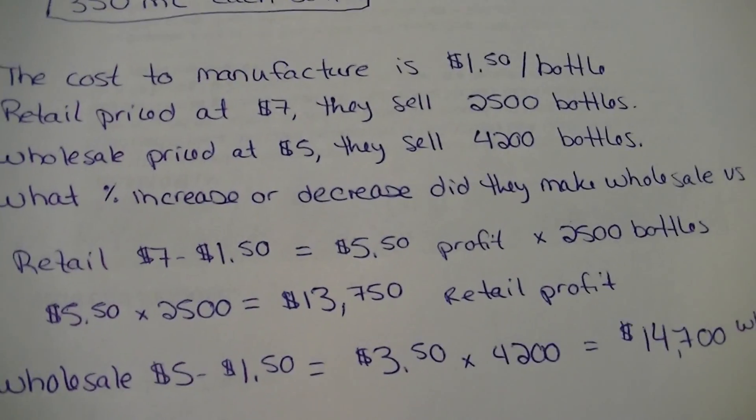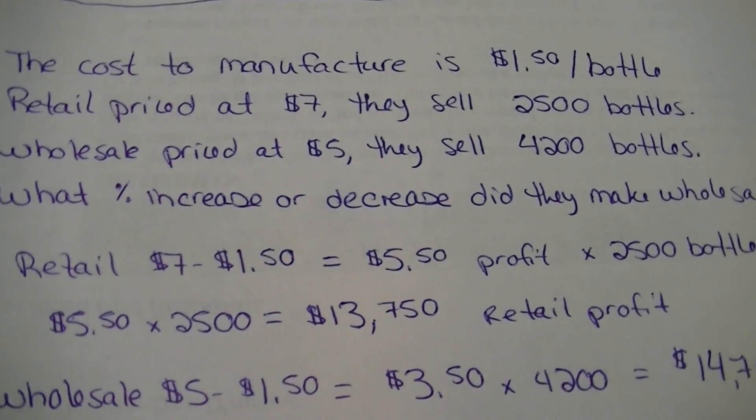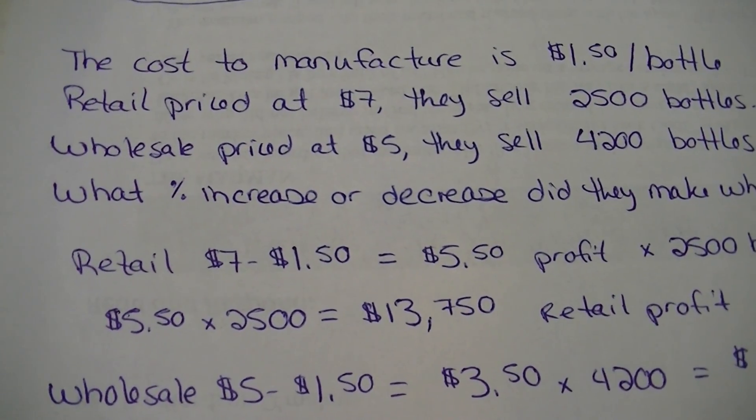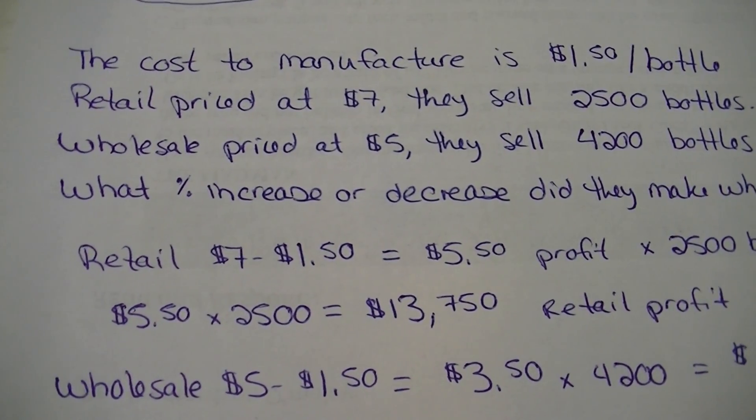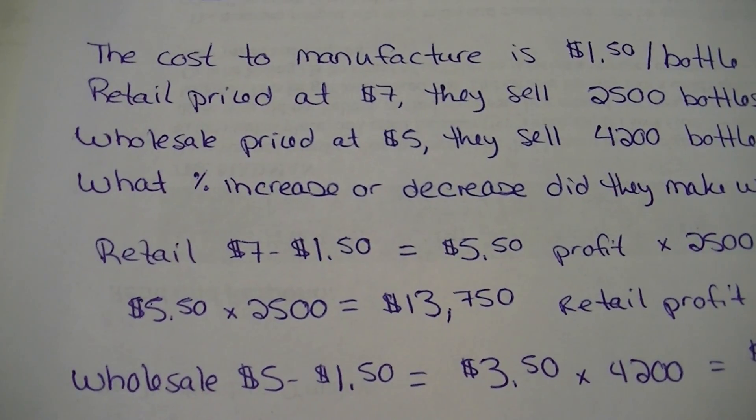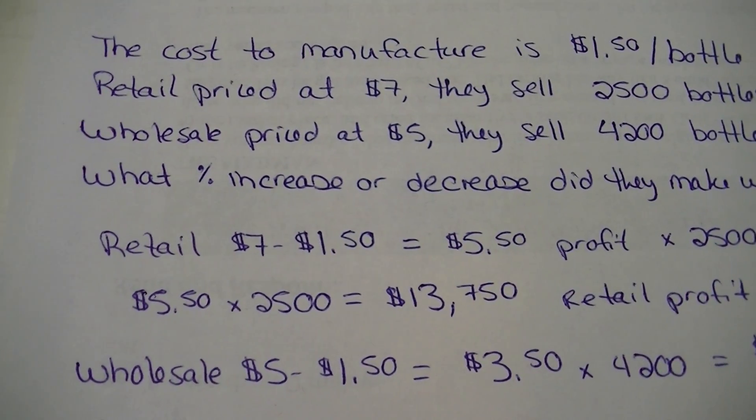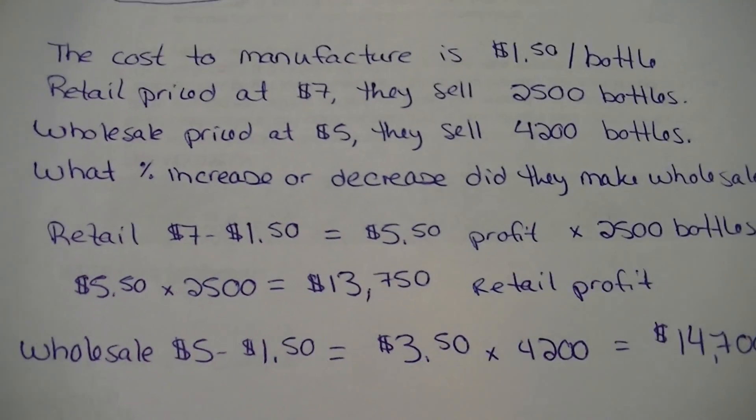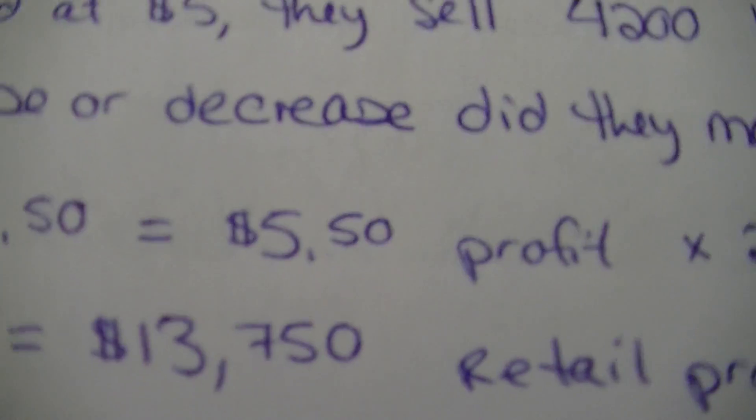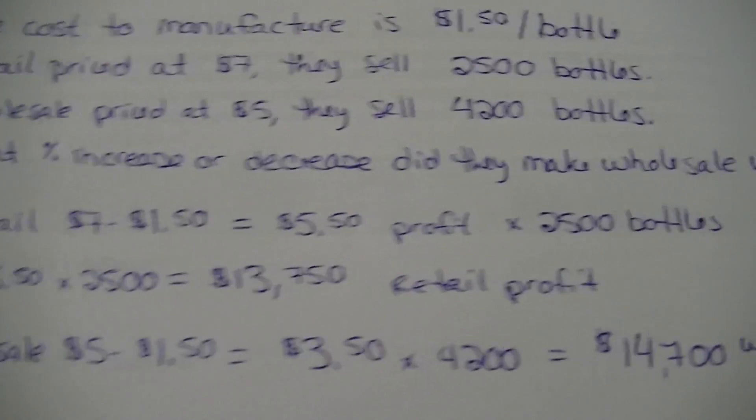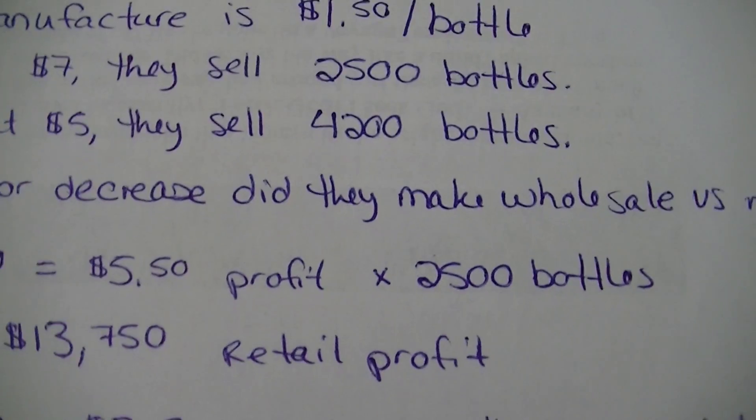So let's look at our numbers. We're just going to plug them in here. First of all, we've got to figure out the profit for each price, right? So I'm going to take my retail price, which is $7, and I'm going to subtract what it takes to make it, which is $1.50. So that means for each bottle that they sell at $7, they're making a profit of $5.50. And we had how many bottles sold at that amount? We had 2,500 bottles.